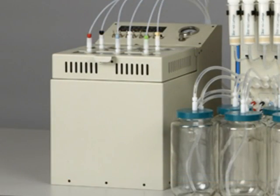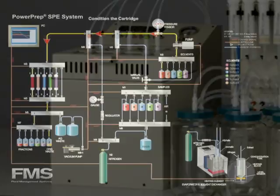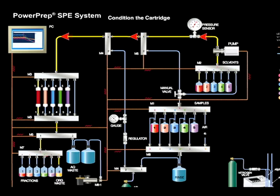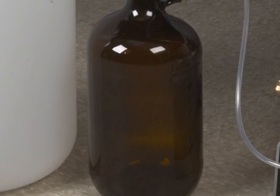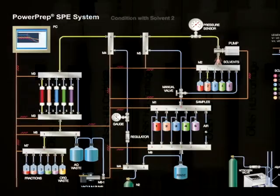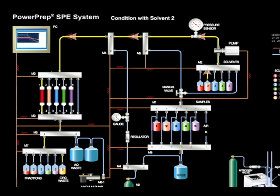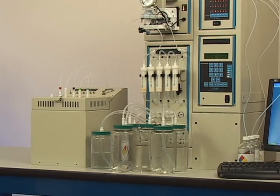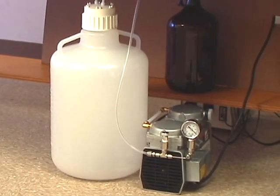The concentrator is turned on automatically by the software. The SPE system conditions the SPE cartridge with the first solvent, methanol. The solvent is sent to the organic waste reservoir. The SPE system conditions the cartridge with a second solvent, water. The SPE triggers the vacuum pump to start loading the sample into the SPE cartridge at a rate of 100 milliliters per minute. A 1 liter sample loads in 10 minutes. The water sample waste is sent to the aqueous waste reservoir.